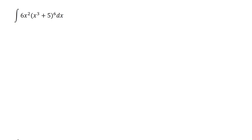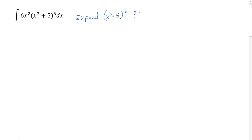We have the integral of 6x squared times the quantity x cubed plus 5, raised to the sixth power. This certainly looks complicated. One approach is we could expand x cubed plus 5 to the sixth power, then distribute by multiplying each term by 6x squared, giving us a long polynomial. Polynomials are fairly easy to integrate, but expanding x cubed plus 5 to the sixth power is not easy. So instead, we're going to use substitution to make this simpler.